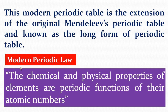Based upon this, we state the Modern Periodic Law: the chemical and physical properties of elements — chemical meaning how elements react with acids and bases, and physical properties meaning their melting point and boiling point — are a periodic function of their atomic numbers.